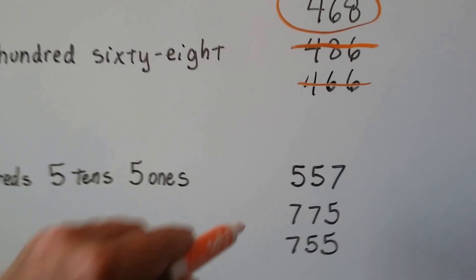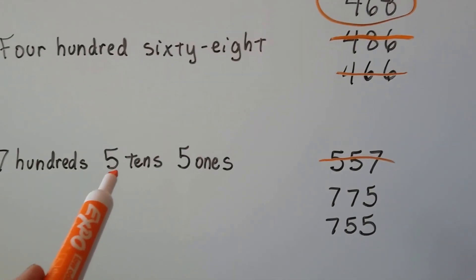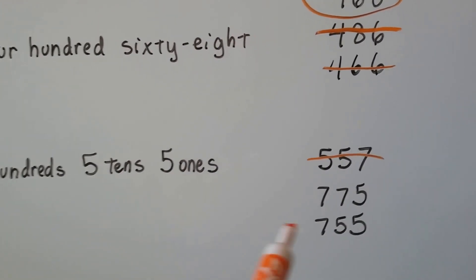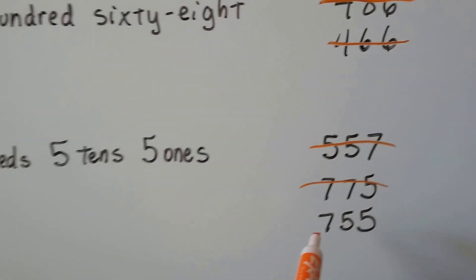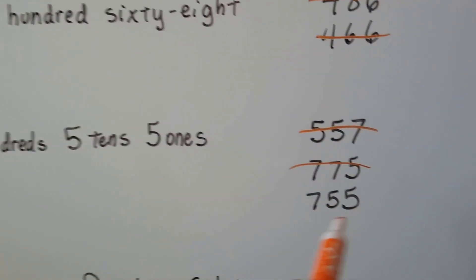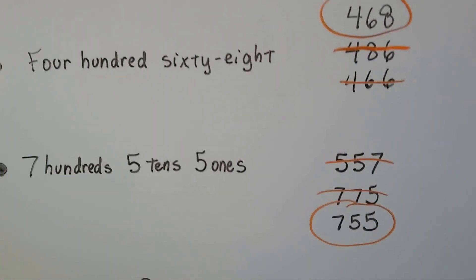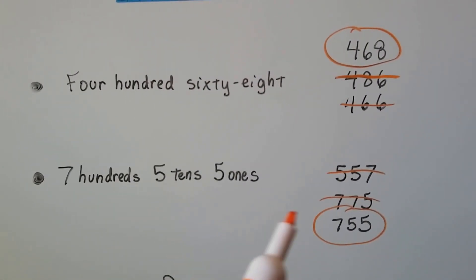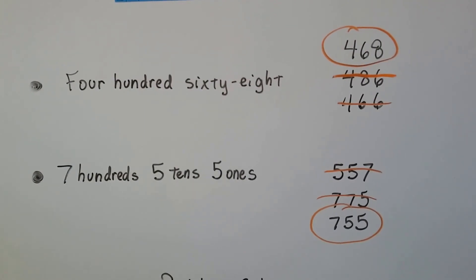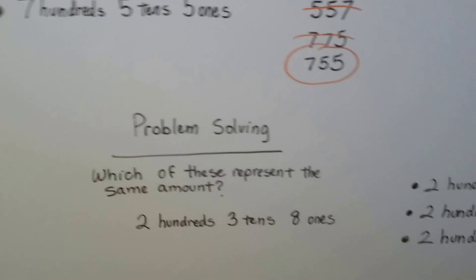Seven hundreds, five tens, and five ones — it has to start with a seven in the hundreds place. We can eliminate one option because it has a five in the hundreds place. The correct answer is seven hundred fifty-five. Sometimes when a problem is hard, you start eliminating the ones you know are wrong — that's called process of elimination.